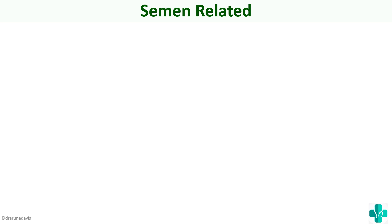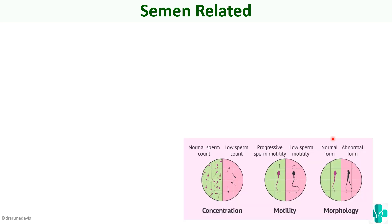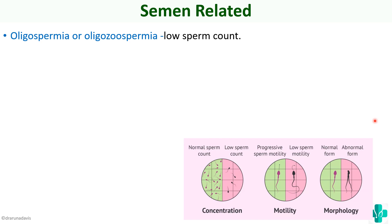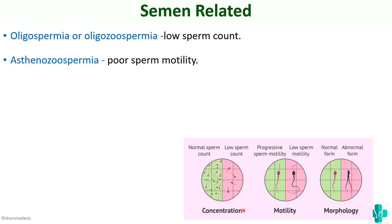Next we will move on to the semen related factors. Here spermatogenesis is present but the quality of the semen is not adequate to produce fertilization. The first condition is oligospermia or oligozoospermia, which means lower sperm count — the amount of sperm present is less. Next is asthenozoospermia, which means poor sperm motility — the sperms are not agile enough to move forward.